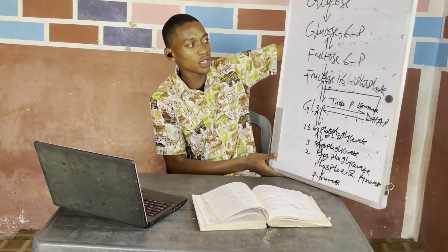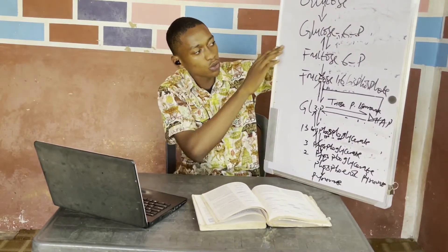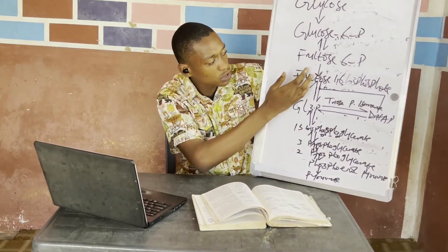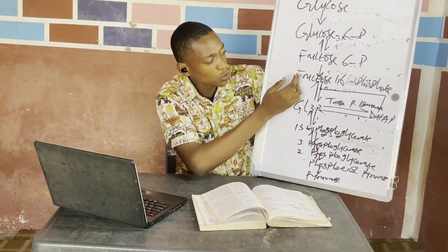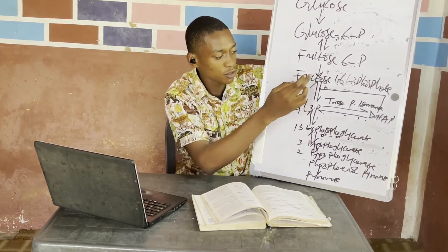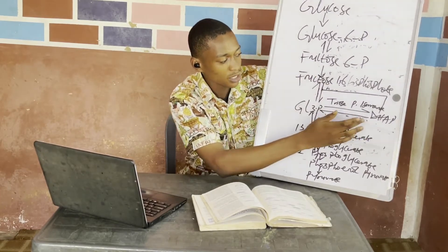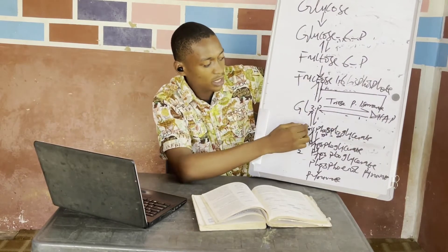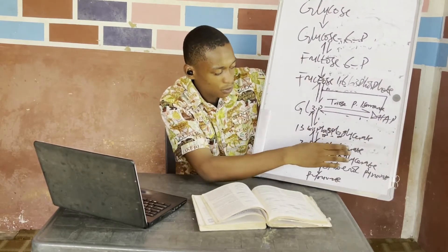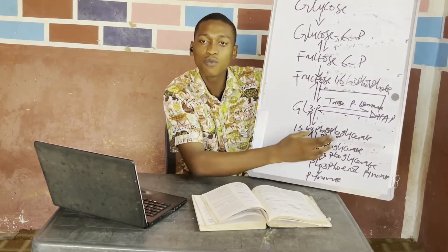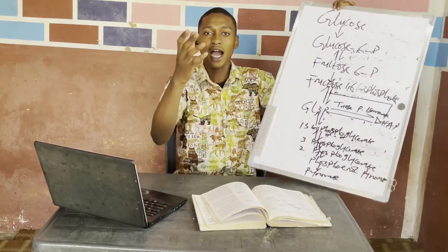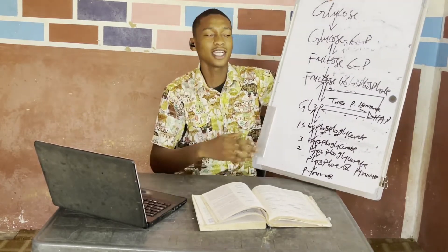Look at this table: glucose → glucose-6-phosphate → fructose-6-phosphate → fructose-1,6-bisphosphate → glyceraldehyde-3-phosphate → dihydroxyacetone phosphate → 1,3-bisphosphoglycerate → 3-phosphoglycerate → 2-phosphoglycerate → phosphoenolpyruvate → pyruvate.